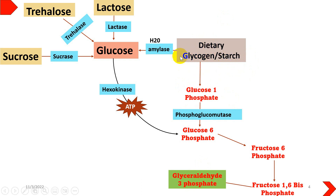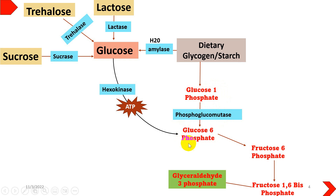There are two fates for dietary glycogen or starch: one is through amylase via the hydrolysis process, while the other is by converting glycogen into glucose-1-phosphate with the help of phosphorylase or phosphatase enzyme. That glucose-1-phosphate is then acted upon by phosphoglucomutase, which is a type of isomerase enzyme. It rearranges the position of the phosphate on the glucose molecule to form glucose-6-phosphate.